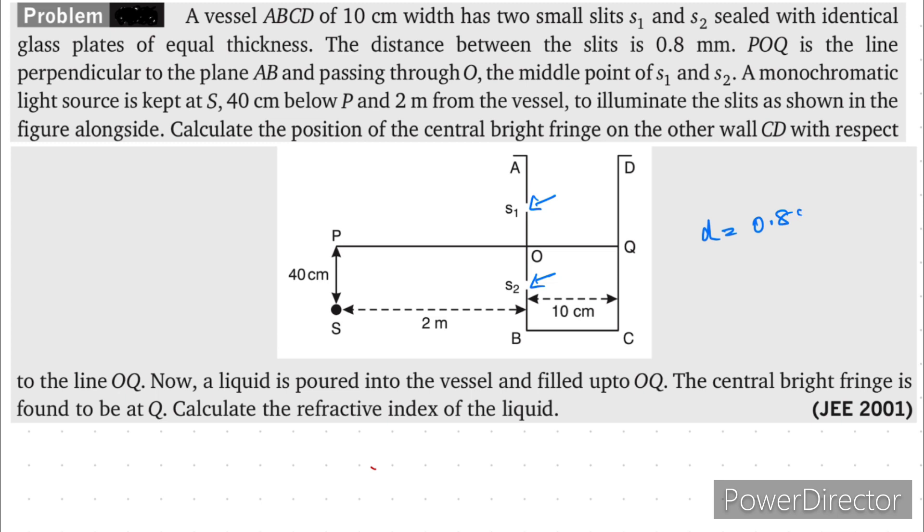Given is D is equal to 0.8 mm. POQ is the line perpendicular plane AB and passing through O, the middle point of S1 and S2. A monochromatic source is kept S, 40 cm below P and 2 m from the vessel to illuminate the slits as shown in the figure alongside. Calculate the position of the central bright fringe.